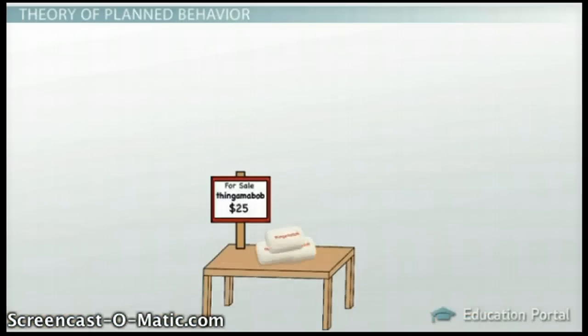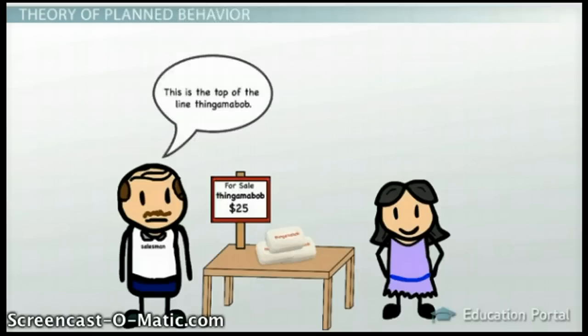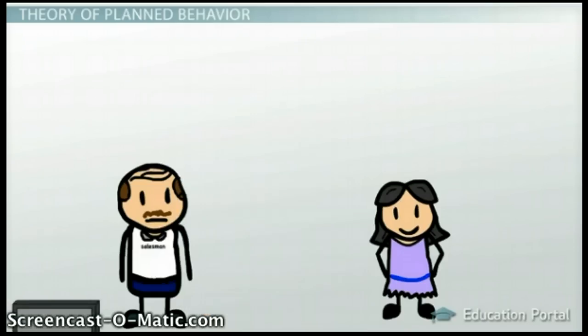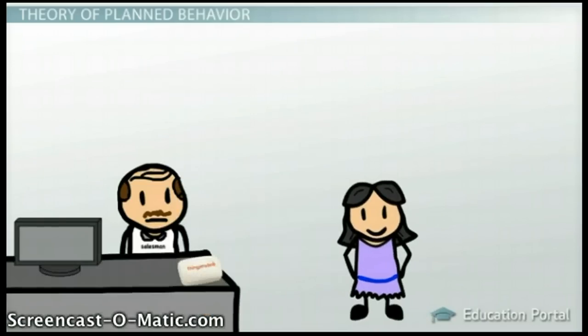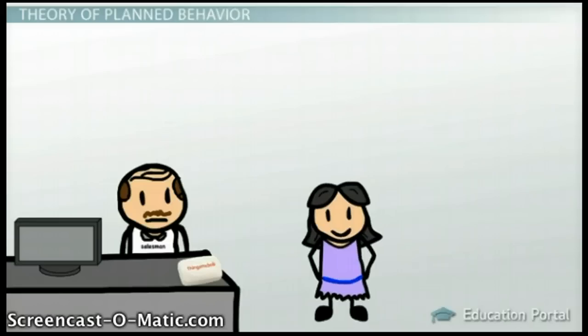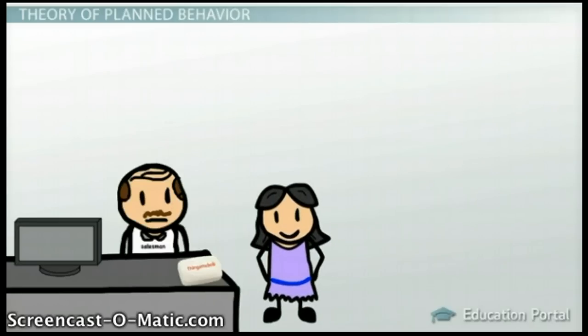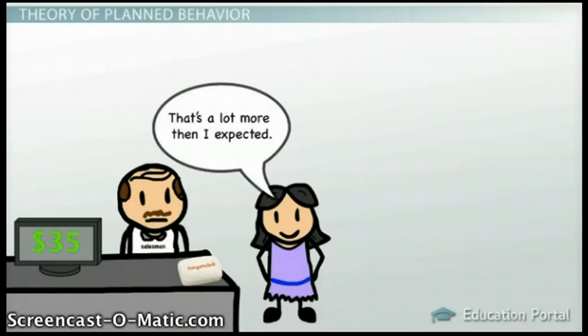For example, a salesman wants to change our attitude about his product, so we will actually buy it. It is true that attitudes are a good way to predict spontaneous, unplanned behavior. However, our attitudes don't always correctly predict our deliberate behavior, at least not on their own.